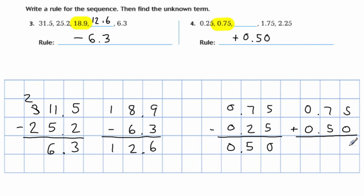5 plus 0 is 5. 7 plus 5 is 12. And then 1 plus those 0s is 1. Don't forget your decimal. So the missing number, 1.25.